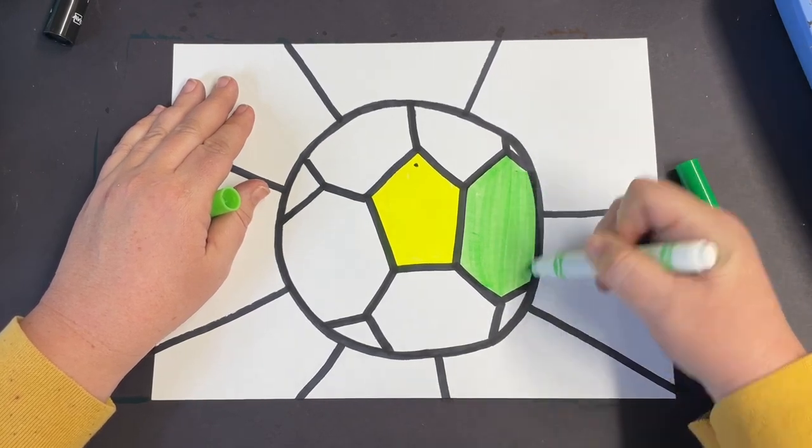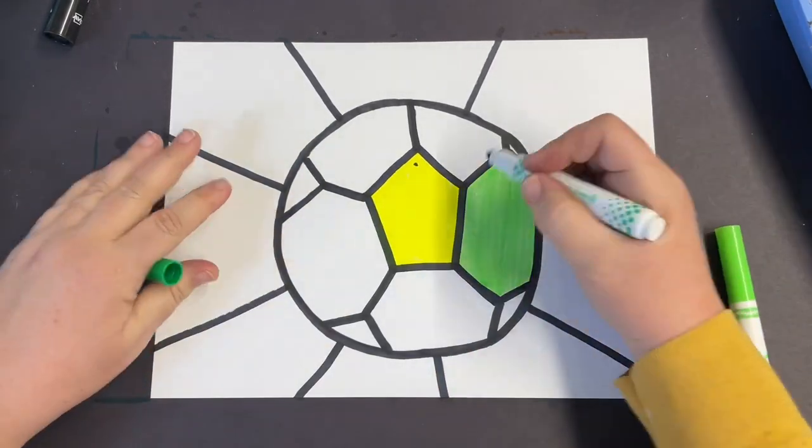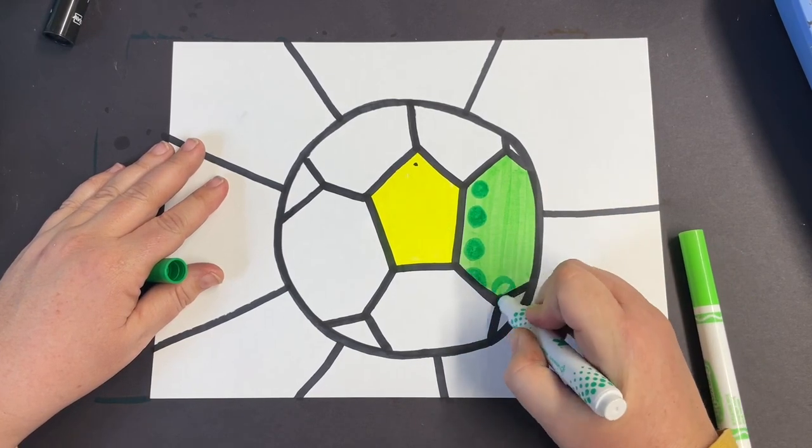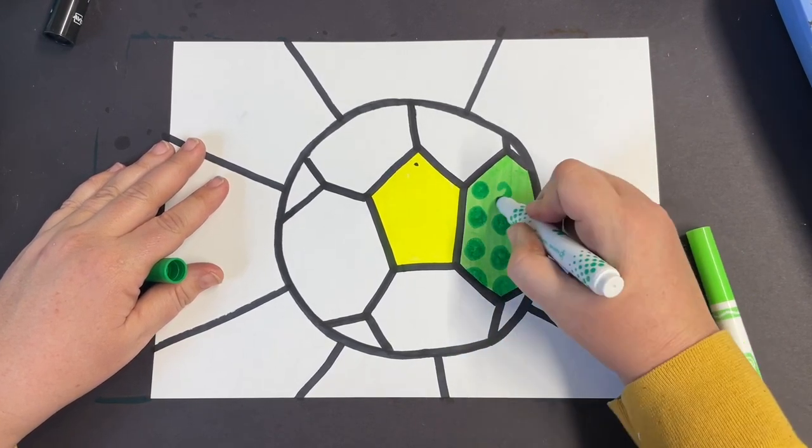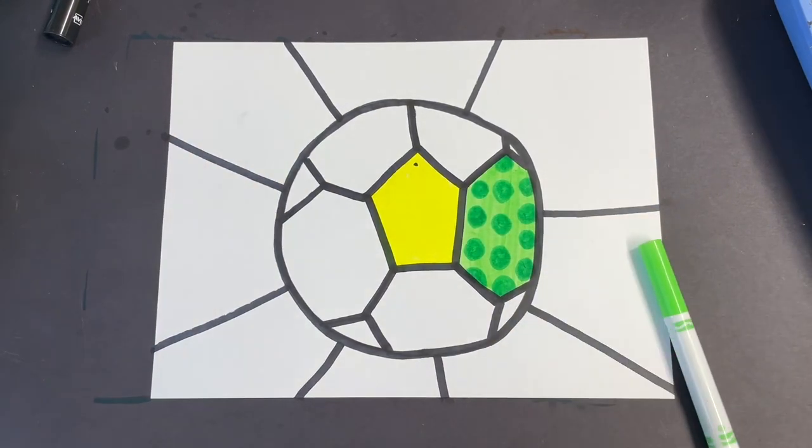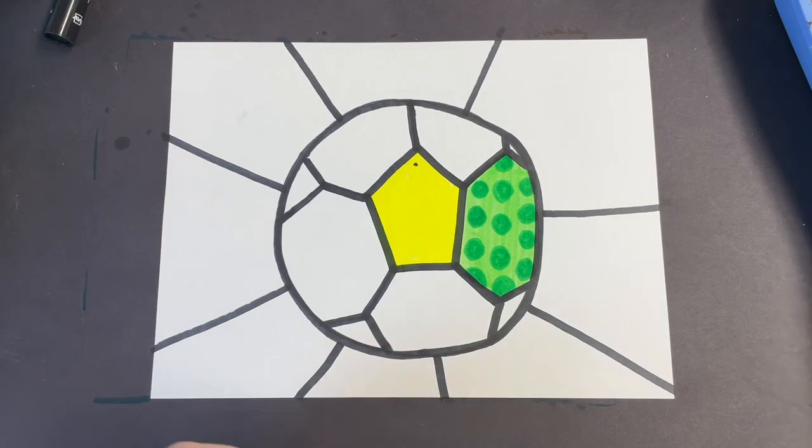So for this section, I'm filling in with light green, but then I'm going to take my dark green to create a pattern on top. That's a lot easier than trying to draw and color all of those green circles and then color in around it.